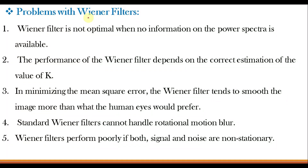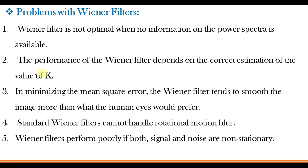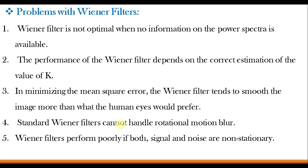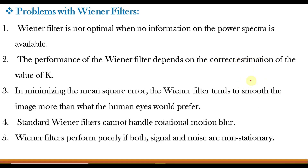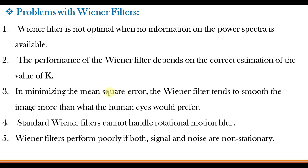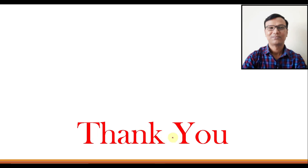Although the Wiener filter is the most widely used filter, it has some drawbacks: (1) it is not optimal when no information on the power spectra is available; (2) performance depends on correct estimation of K; (3) in minimizing MSE it tends to smooth the image more than human eyes prefer; (4) standard Wiener filters cannot handle rotational motion blur; and (5) it performs poorly if both signal and noise are non-stationary. Due to these problems, the solution is constrained least squares filtering, which we will learn in the next video class. Thank you very much.